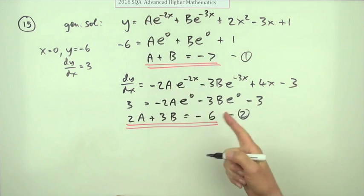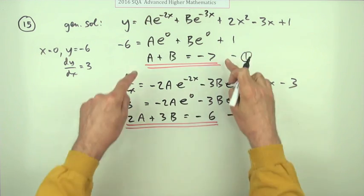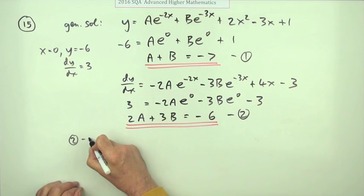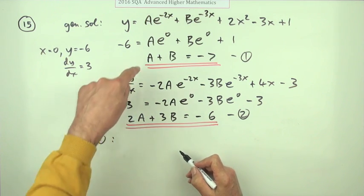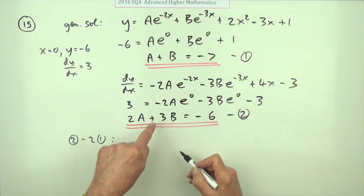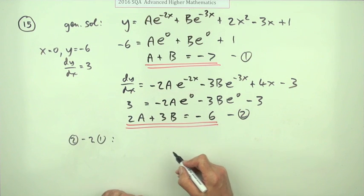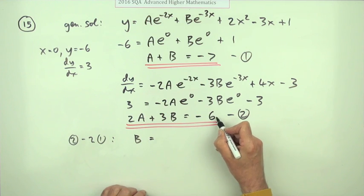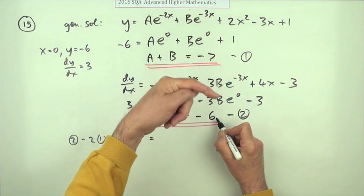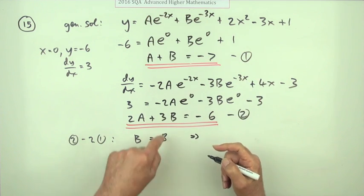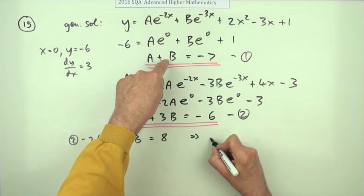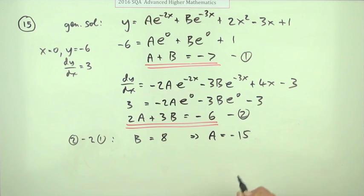So there's a second equation. Now I could do a substitution, but I think I'll just use elimination. I'll subtract 2 of them from this. 2a minus 2a disappears. 3b minus 2 lots of that just goes down to a single b. That was very handy. And negative 6 but plus 14 gives me an 8. And then immediately from number 1, if b is 8, a must be negative 15.